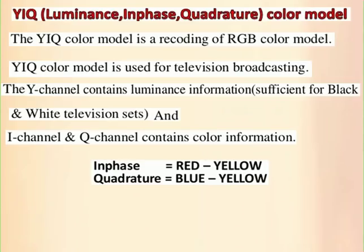Let us understand the YIQ color model, where it stands for luminance, in-phase and quadrature. The YIQ color model is a recoding of the RGB color model. The YIQ color model is used for television broadcasting. The Y channel contains luminance information sufficient for black-and-white television sets, and the I channel and Q channel contain color information. In-phase is derived by subtracting the yellow color from red, and quadrature is derived by subtracting yellow from blue. We remove the yellow component from the RGB model.